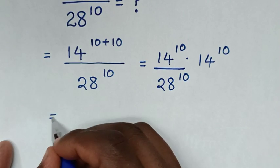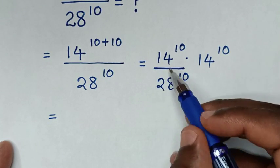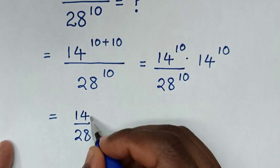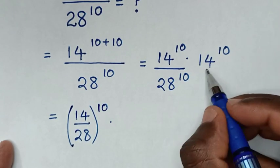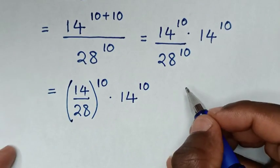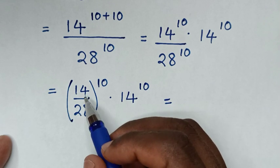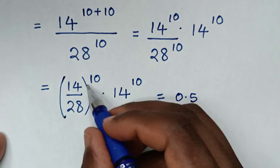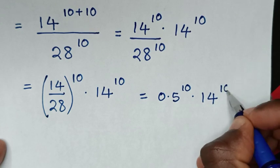Then it will be equal to — in this division of exponents with the same power of 10 — it will be 14 over 28, then bracket with the same power of 10, then times this exponent 14 power of 10. Then 14 divided by 28 is a half, which is 0.5, so it will be 0.5 power of 10 times 14 power of 10.